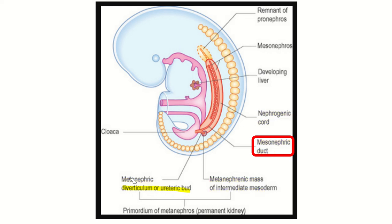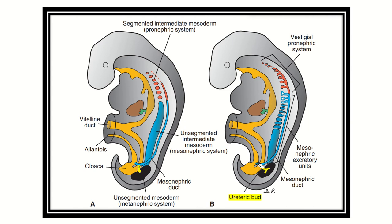In the second picture, we can see the ureteric part arising from the mesonephric duct. This is the ureteric bud, and it forms the collecting system of the urinary system — it derives from the mesonephric duct. Above, we can see the mesonephric excretory unit, which is formed by the mesonephric duct.